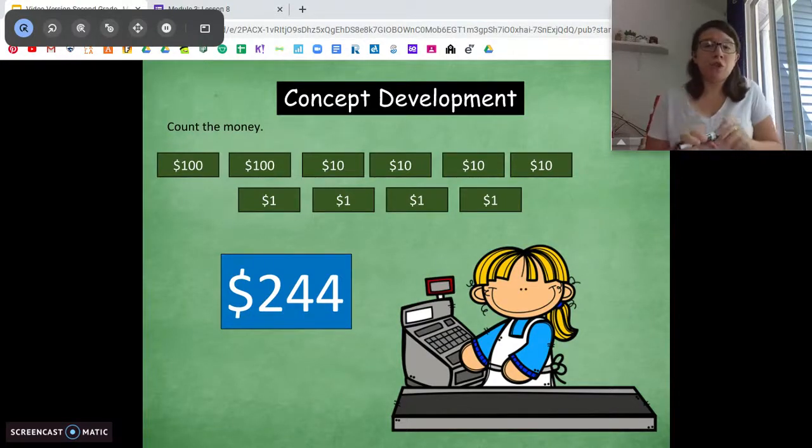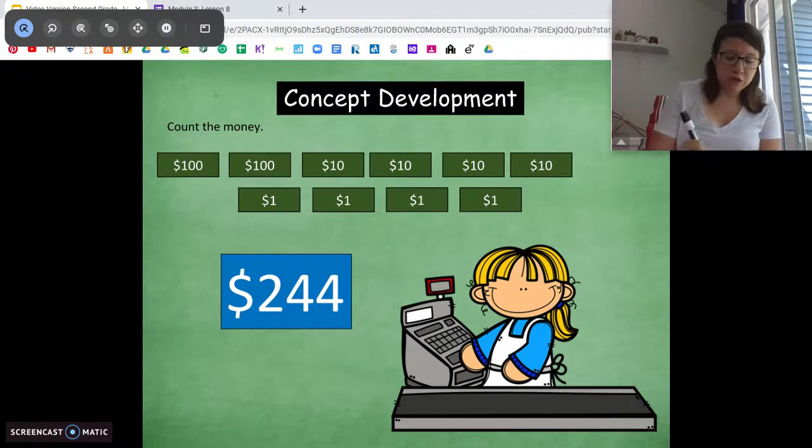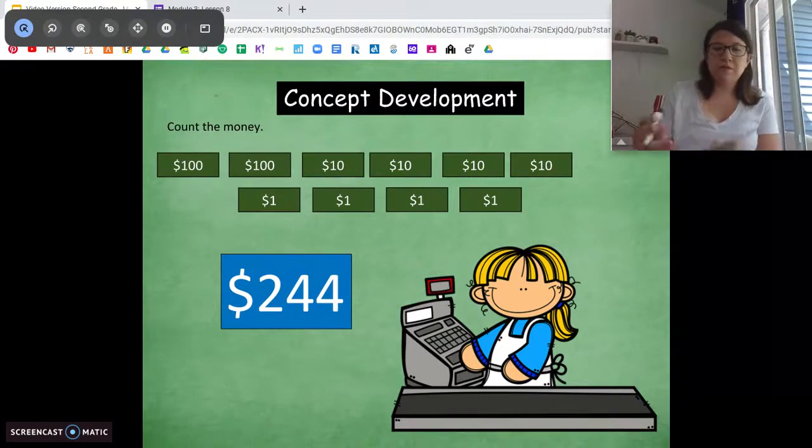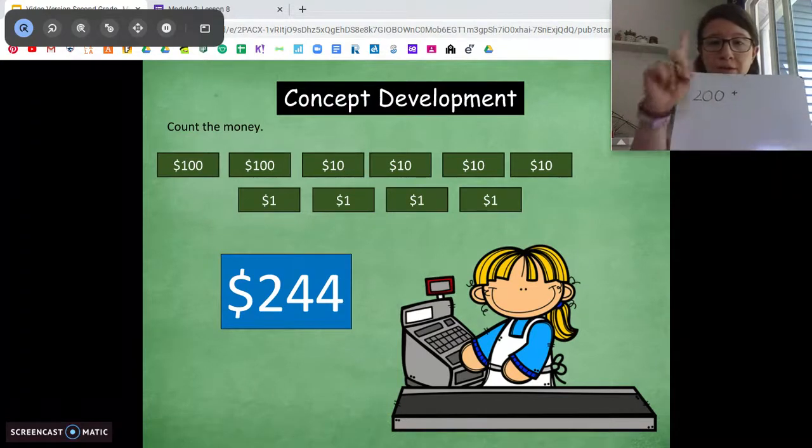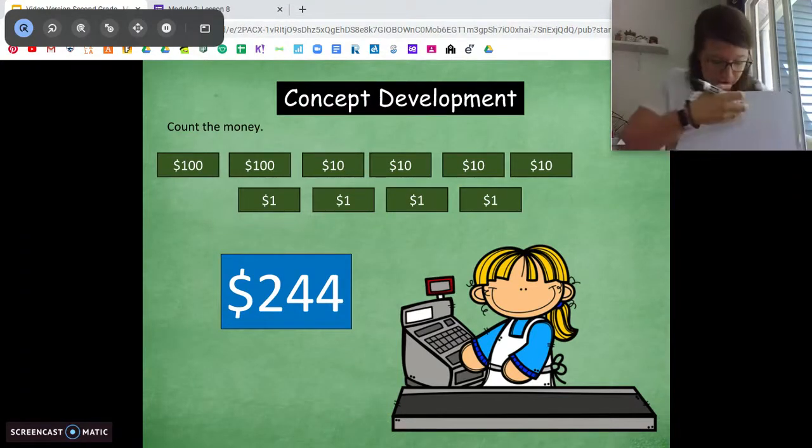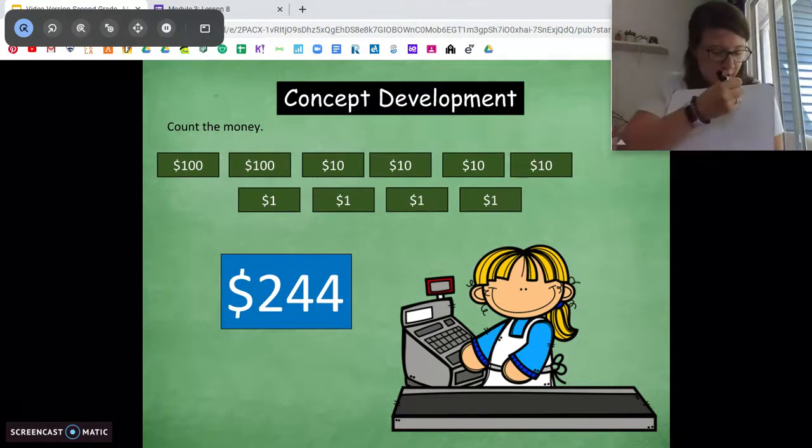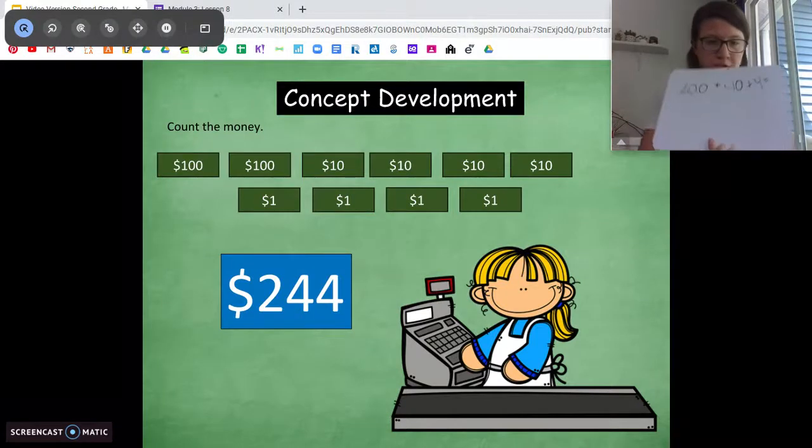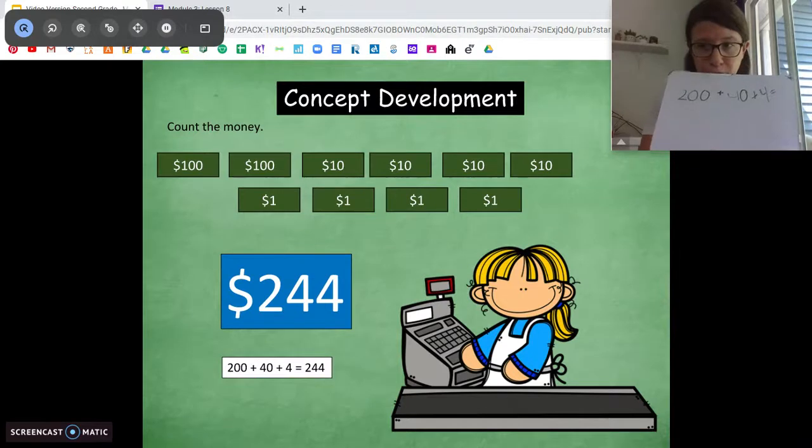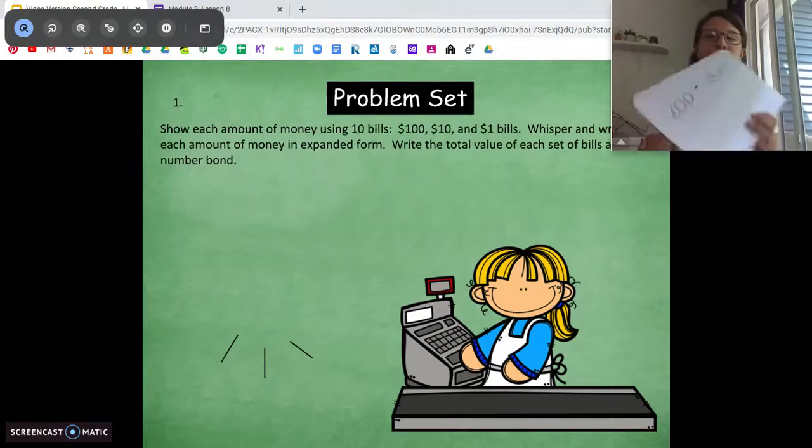So, I know I have two $100 bills, which is $200. I'm going to start with that. And then I have four $10 bills. 10, 20, 30, 40. So, I'm going to add 40. And then I have four one dollar bills that gets me to four. So, that's going to be my expanded form of $244. All right. Same thing as tens and ones, but we're just working with money.